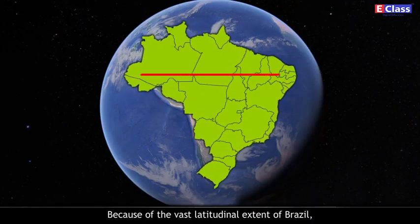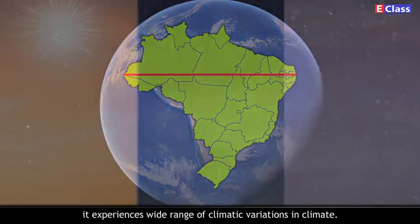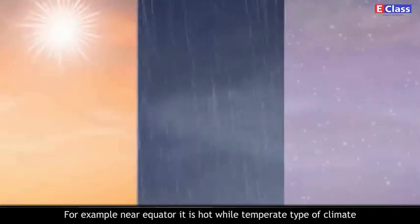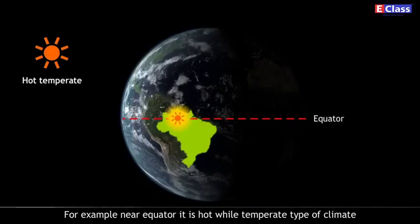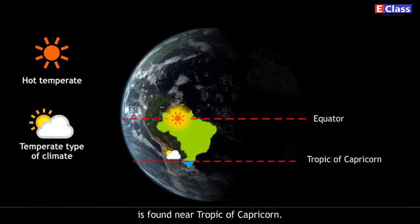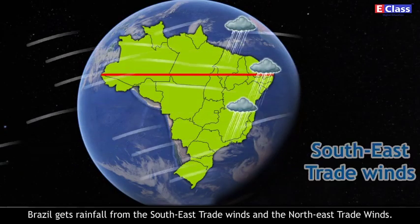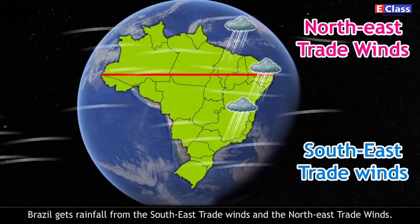Because of the vast latitudinal extent of Brazil, it experiences a wide range of climatic variations. For example, near the equator it is hot, while a temperate type of climate is found near the Tropic of Capricorn. Brazil gets rainfall from the south-east trade winds and the north-east trade winds.